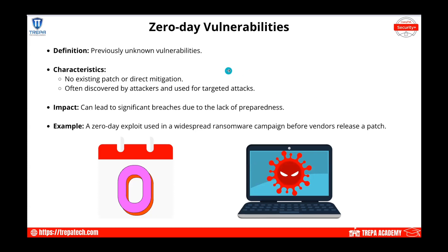Zero-day vulnerabilities are simply vulnerabilities that are not yet known — meaning there's no patch for them. For example, if malware exploits Windows 11 and Microsoft has no patch available, that's a zero-day. There's no direct mitigation or existing patch. These are often discovered by attackers and used for targeted attacks, or discovered through threat hunting, scanning, logging, and behavior analysis — for instance, noticing data exfiltration from malware without a known signature.